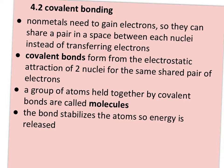Covalent bonds occur between two nonmetals because they both need to gain electrons, so rather than transferring electrons, they simply share a pair in a space between each nuclei. The covalent bond forms from the electrostatic attraction of two nuclei for the same shared pair of electrons. A group of atoms held together by a covalent bond is called a molecule, and they exist individually, unlike the ongoing alternating lattice that ionic compounds form.